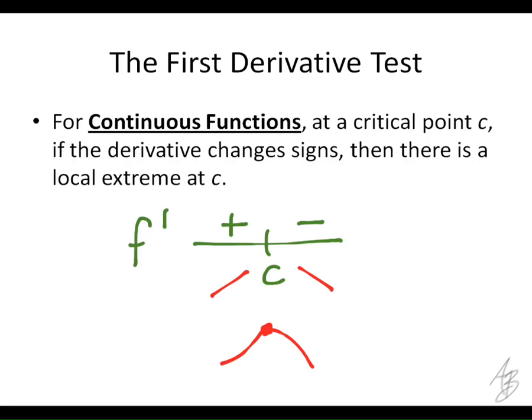So if it changes signs from positive to negative, it's going to be a maximum. This is going to be something you'll have to explain on a test. I'm going to ask you if a point is a maximum or a minimum, and you'll have to say it's a maximum but also explain why. You could say the function changes from increasing to decreasing, or the derivative changes from positive to negative. Since we're using the first derivative test, we describe it as: the derivative changes from positive to negative, therefore that point is going to be a maximum.